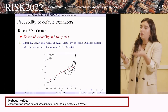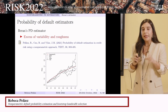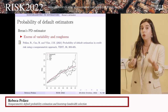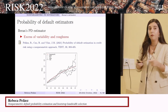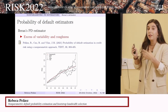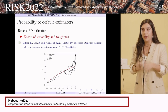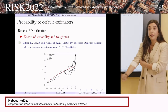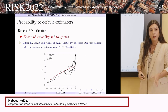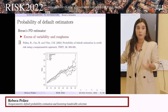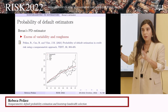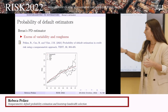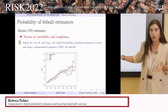This fact, along with the quotient between survivals needed to obtain the probability of default estimator, leads to an excess of variability and roughness of the estimated curve. In the plot, the theoretical probability of default for a certain model is shown in red, and in black are the estimations obtained with different estimators including the Beran estimator — the roughness of the curves is clear.